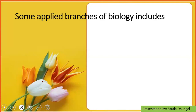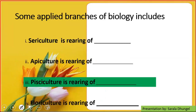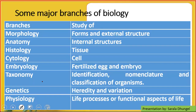So here are again a few questions to answer. You need to pause the video for a while and answer them. Sericulture is the rearing of what? Apiculture? Pisciculture? The answers are: sericulture is the rearing of silkworms, apiculture is the rearing of bees, pisciculture is the rearing of fish, and floriculture is the rearing of flowers. These are the different applied branches of biology.